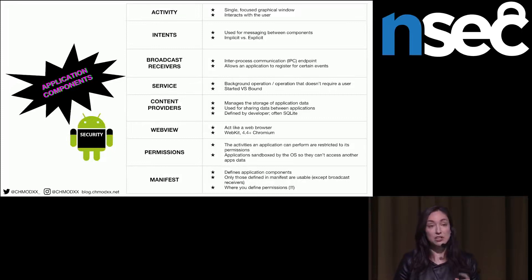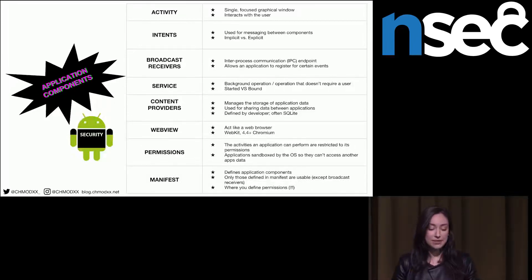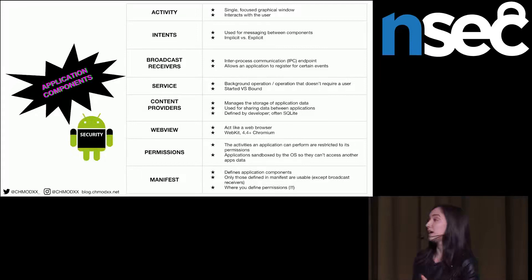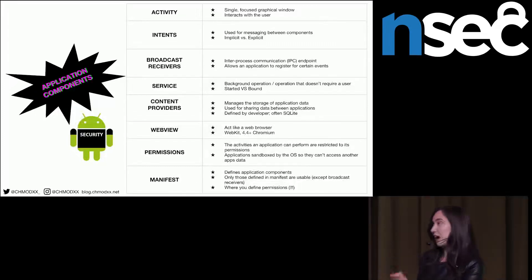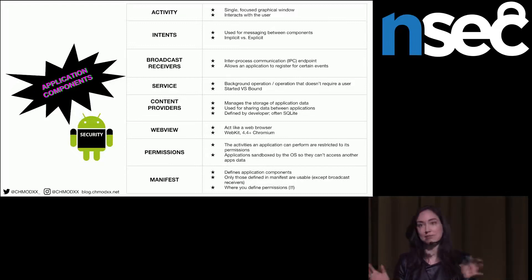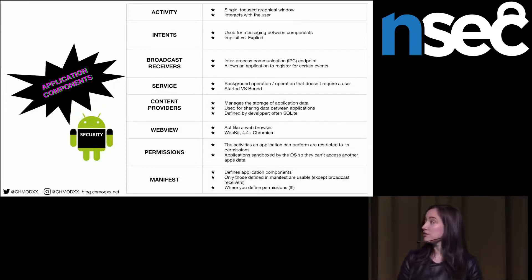Broadcast receivers are inter-process communication endpoints that allow an application to register for certain events it might want to respond to. For example, an app requiring a notification when receiving a text message would register with the SMS broadcast receiver, and the code is only executed when that event happens. Broadcast receivers are the only components in Android that can be created at runtime.